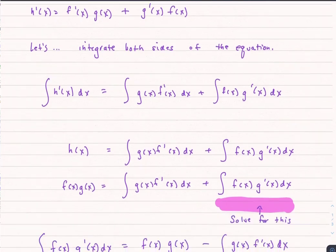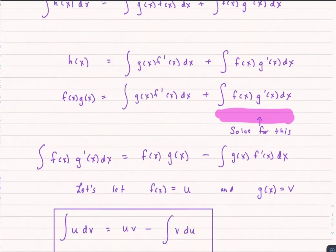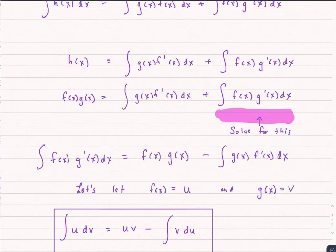I'm going to solve for the integral of f(x) times g'(x) dx. When I do that, I get this. Now what I'm going to do is let u equal f(x), and g, I'm going to have that equal v. Once I do that, once I do my substitution, I find that the integral of u dv equals u times v minus the integral of v du.